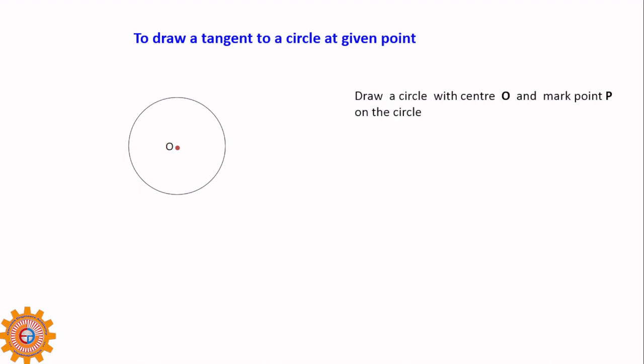Now it is time to mark the point P that is on the circle. You have to draw a line OP and extend the same line up to Q, keeping the distance OP equal to QP. That is, OP is equal to PQ.